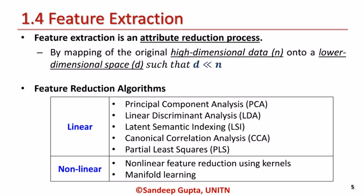Feature extraction is an attribute or feature reduction process to generate a new reduced set of features. Note that it is not the same as feature selection. Feature extraction can be achieved by mapping the original high-dimensional data of size n onto a lower-dimensional space of size d, such that d is much less than n. Feature reduction techniques use both linear and nonlinear algorithms.